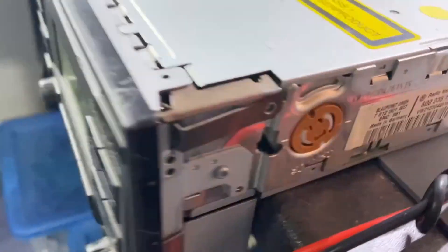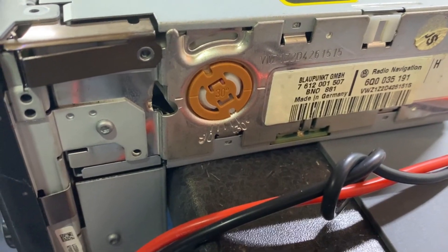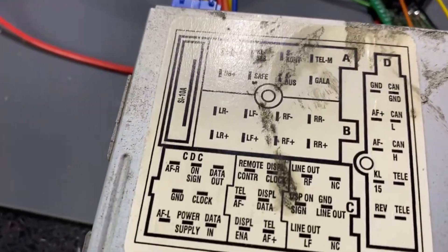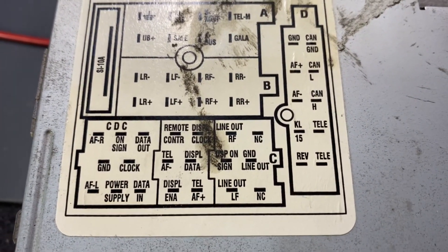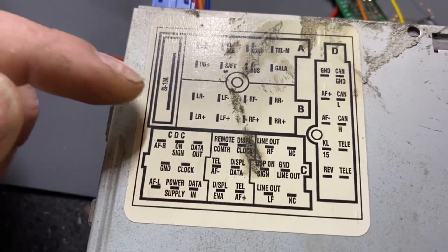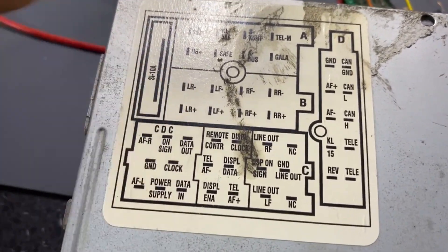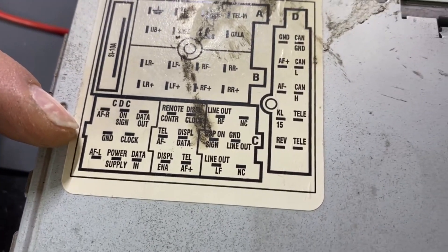This is a MCD BNO 881. This model doesn't have AUX. It has only, as you can see, the power, the speakers, the CD changer - so this is the magazine CD.